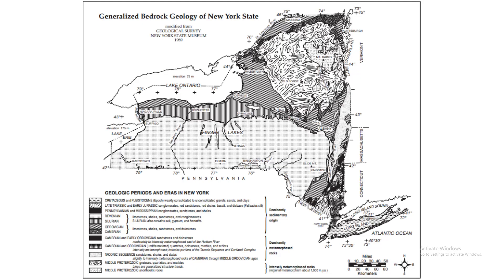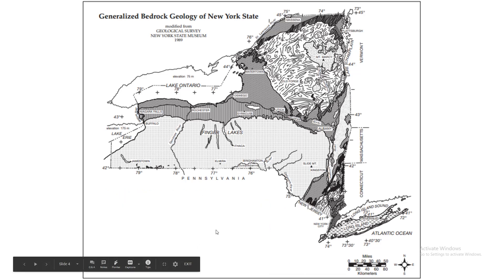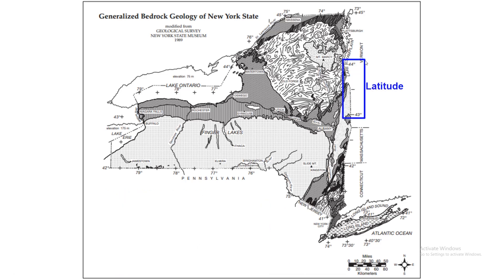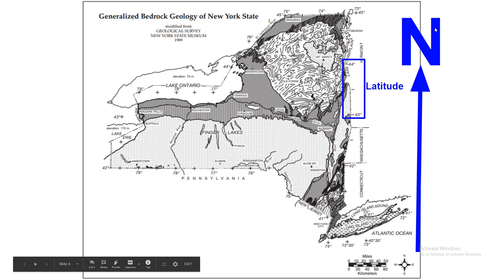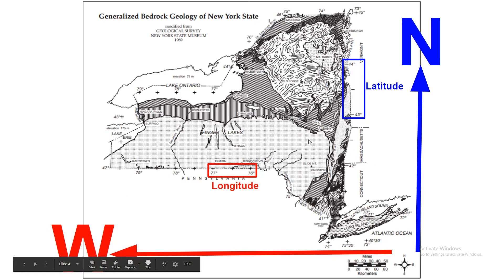The next page is where all the complicated stuff happens. This page is showing you latitude and longitude and the bedrock structure of New York State, so underneath all the soil. Here is the key for it with the period and the type of rock. We're going to go over latitude and longitude. Notice there is no direction on the numbers — we just assume latitude is always north, and longitude is always going to be west because New York is in the northwestern hemisphere. Always assume N and W when working with the New York State map.